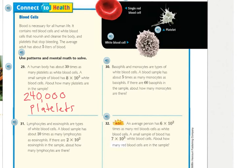Number 30. Basophils and monocytes are types of white blood cells. A blood sample has about 5 times as many monocytes as basophils. There are 60 basophils in the same sample. How many monocytes are there? 5 times 6 is 30, and 5 times 60 would give me 300 monocytes.